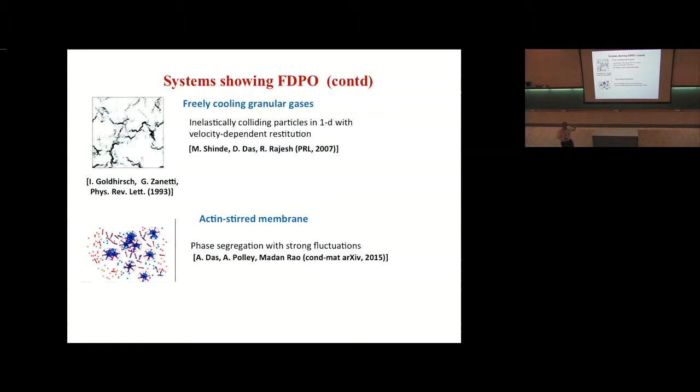The first such study was actually done by Shraddha Mishra and Shriram Ramaswamy, where they actually looked at the density being transported by a nematic field. A model of Chate, where the movement of the rods depends on the orientation, was analyzed in detail by De, Das, and Rajesh. In an experiment on vibrated rods done by Narayan, Menon, and Ramaswamy, giant number fluctuations were observed. Granular gases - a paper by Shinde, Das, and Rajesh in 2007 looked at inelastically colliding particles in one dimension with velocity-dependent coefficients of restitution. And the last example is work of Das, Pauli, and Madanrao, who looked at a model of a cell membrane where you have actin filaments forming esters.